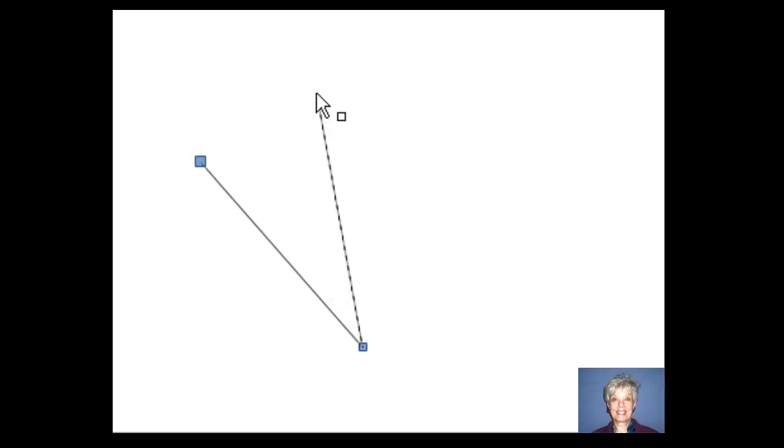Let's go back to the vertical position. If I were to take the line and move it over to the right, it would have a positive slope.